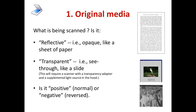The settings you want to control are these seven. First is the original media — what is it that's being scanned? Is it reflective, that is, opaque like a sheet of paper or a page of a book? Is it transparent, something you see through like a slide? This requires a scanner with a transparency adapter that allows you to shoot light down through it, and a supplemental light source usually in the hood. Is it positive (normal) or negative (reverse)? You can scan those things too — they scan very well.